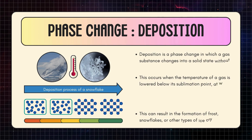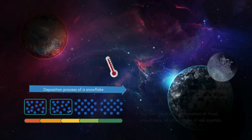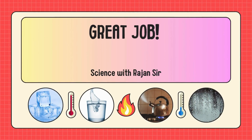Deposition is a phase change in which a gas substance changes into a solid state without first passing through the liquid state. This occurs when the temperature of a gas is lowered below its sublimation point, at which point the molecules become strong enough to cause them to come closer together and form a solid. This can result in the formation of frost, snowflakes, or other types of ice crystals.